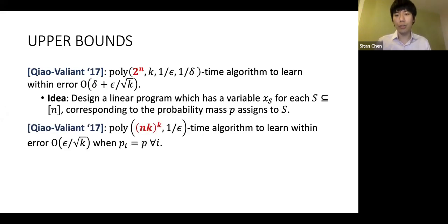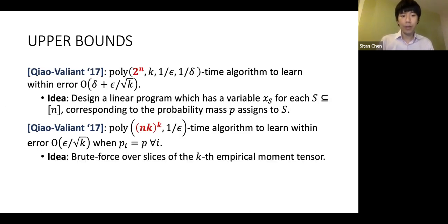On the other hand, in the case where delta equals zero, so when all users have exact access to the central distribution p, they also give an algorithm which is polynomial in the domain size but exponential in k, where k is the batch size. You need to run exponentially in k because you need to brute force over slices of the empirical moment tensor.